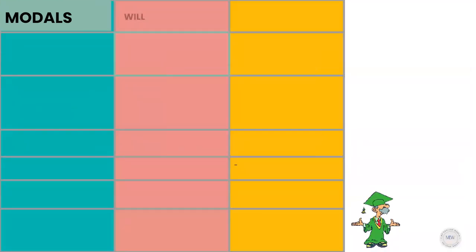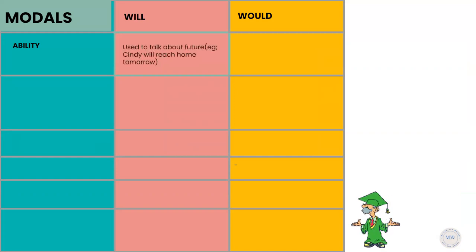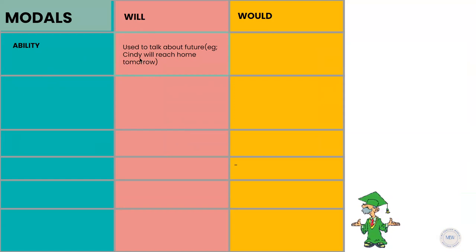The next set of modals — will and would — has a wide range of uses. Let's first talk about how we use will. Will is used to talk about the future. For example: Cindy will reach home tomorrow. Here we are using will as a future tense, and we are not necessarily showing ability but expressing a future event.